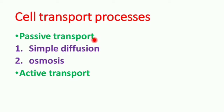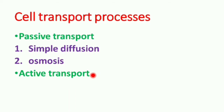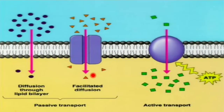Passive transport is of two types: one is simple diffusion, another one is osmosis. Coming to the active transport, here the substances are moved from the low concentration to the higher concentration with the utilization of energy.